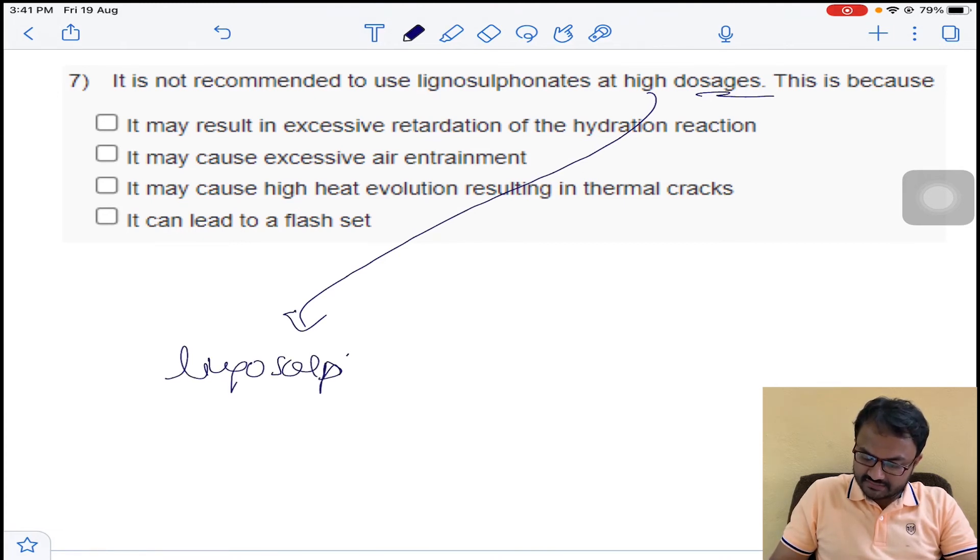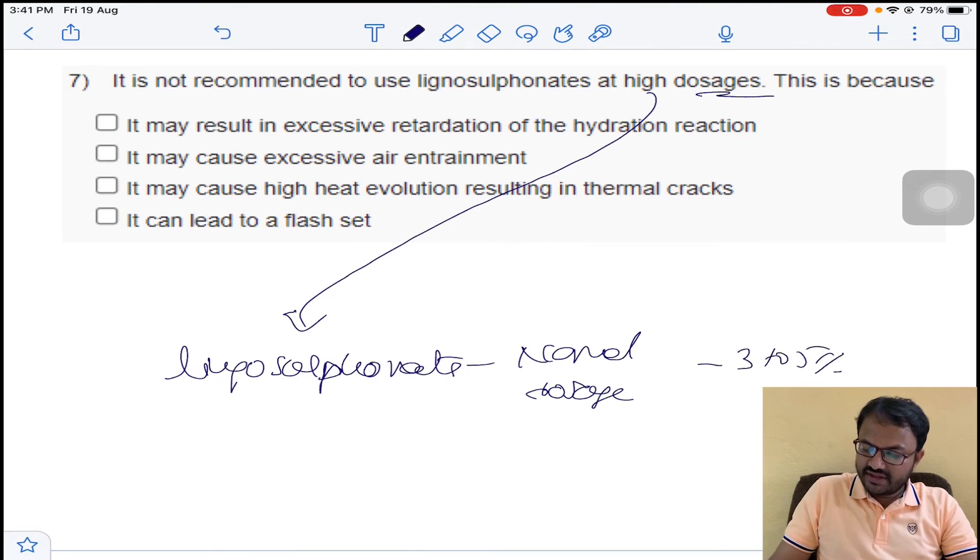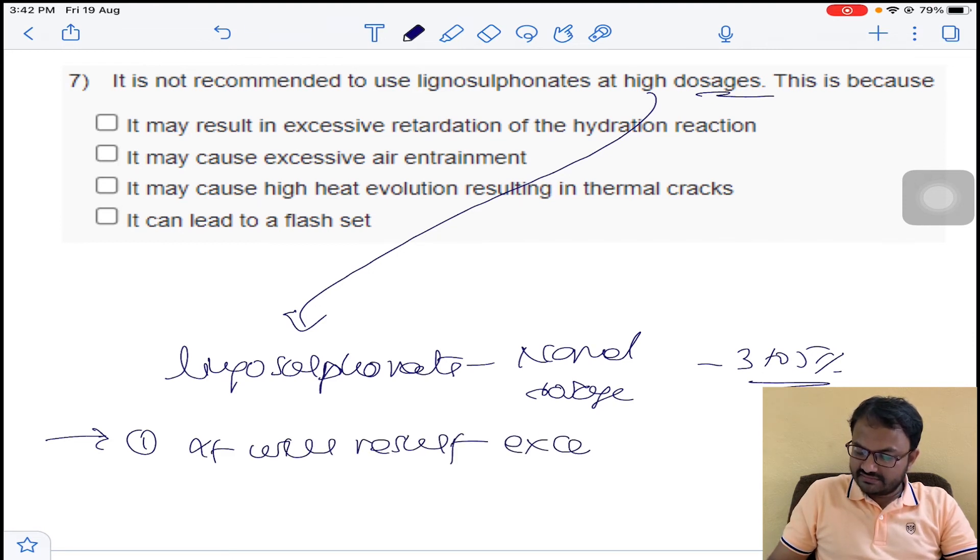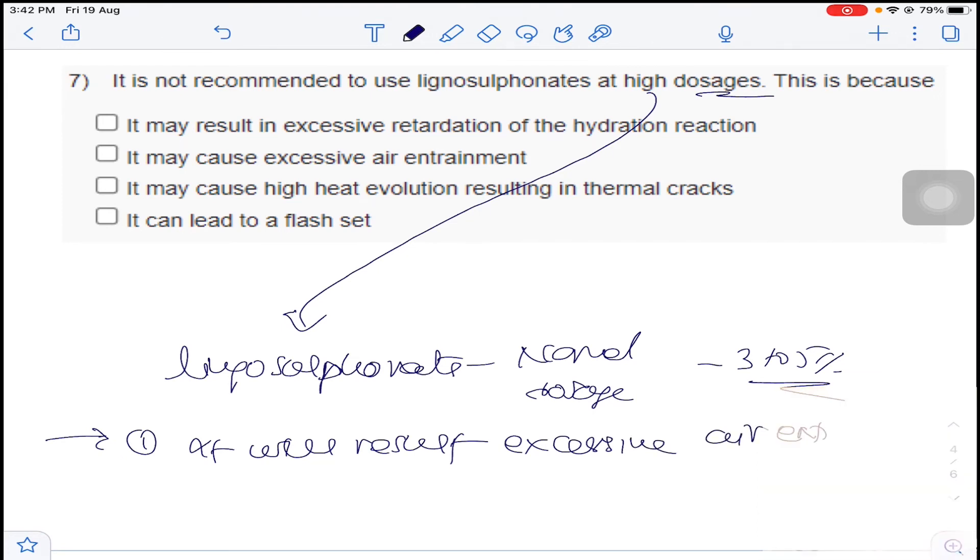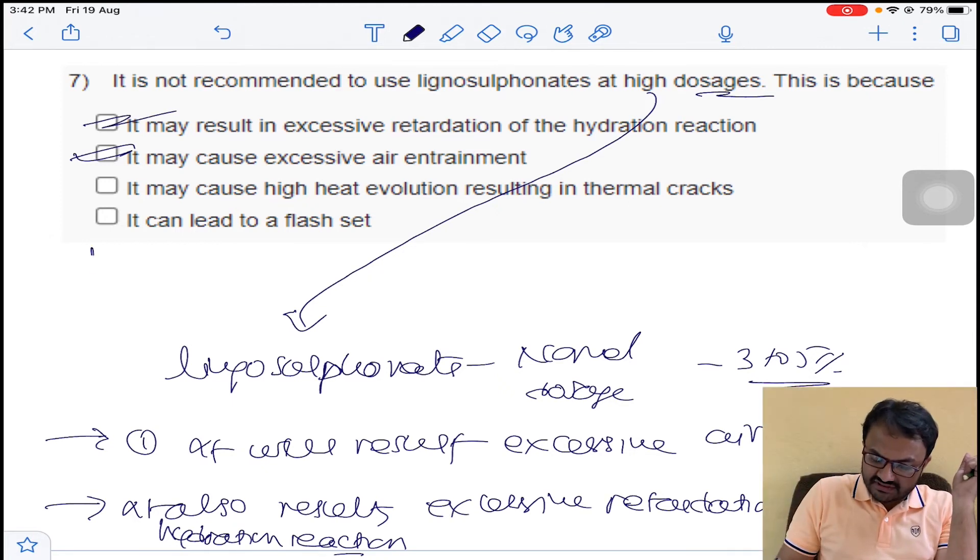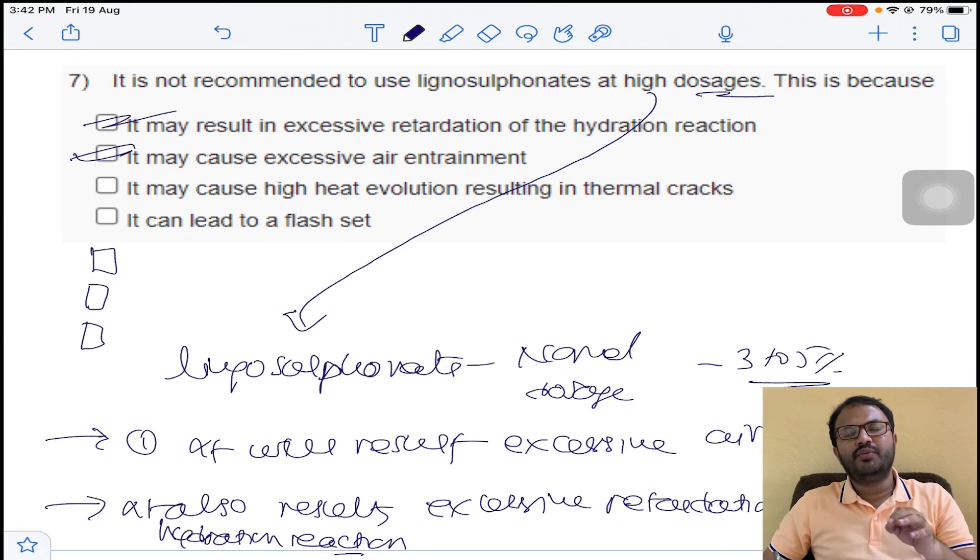If we use the percentage of lignosulfonates beyond this 5 percentage, what will happen? The first point is it will result in excessive air entrainment. That is option B, and it also results in excessive retardation of the hydration reaction. These are options given like square boxes; we can select more than one option. This is something like a multiple answer question.